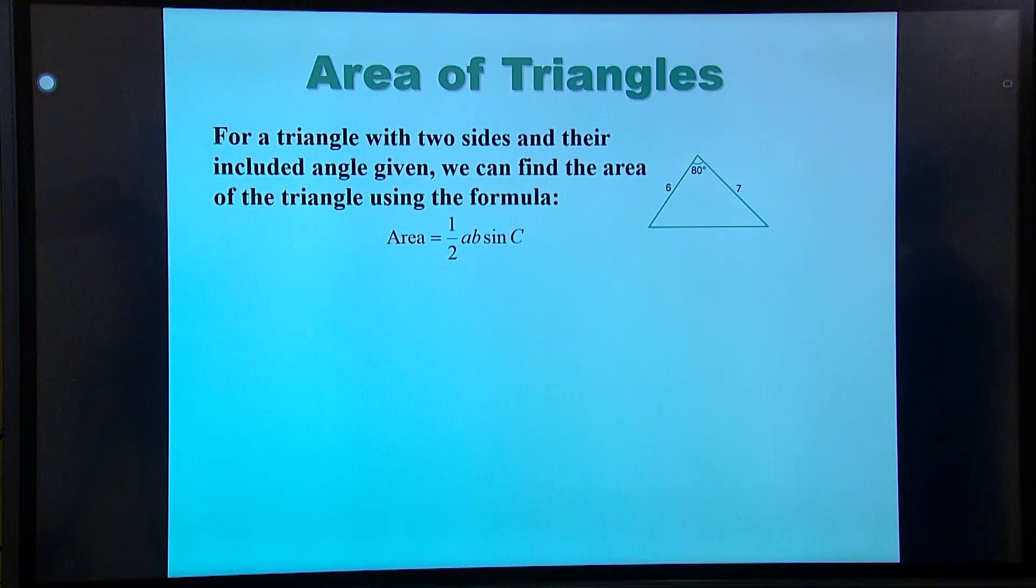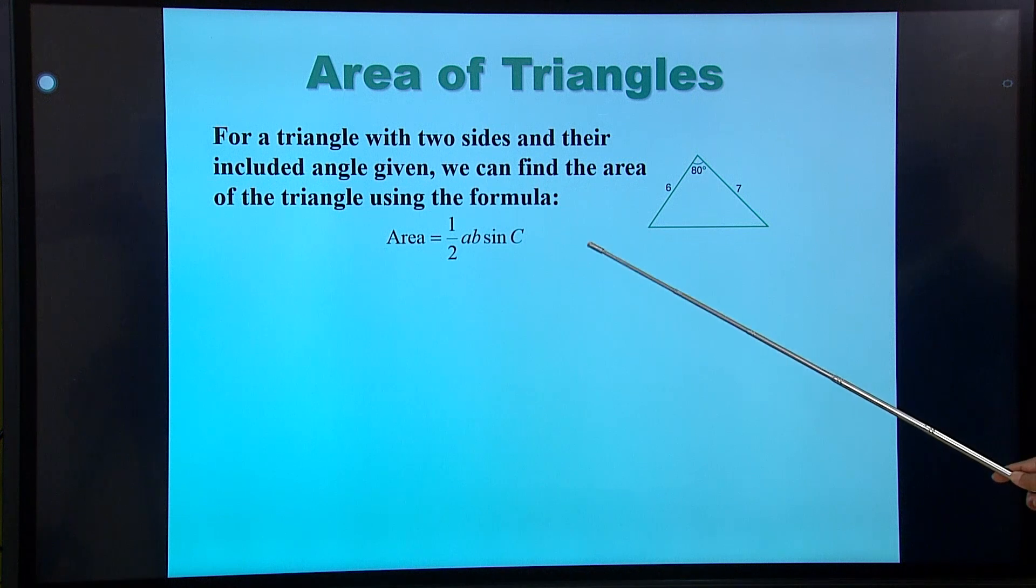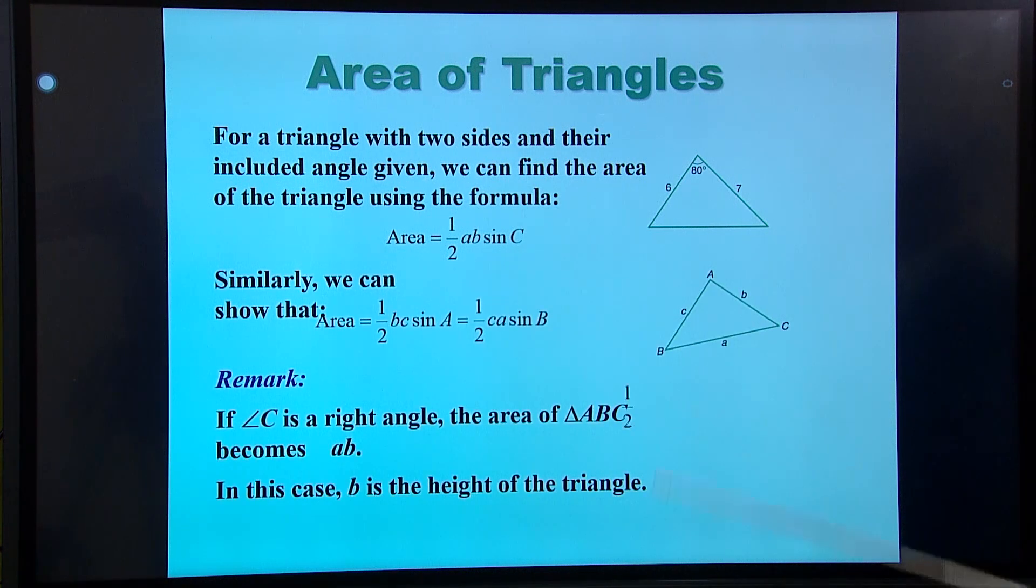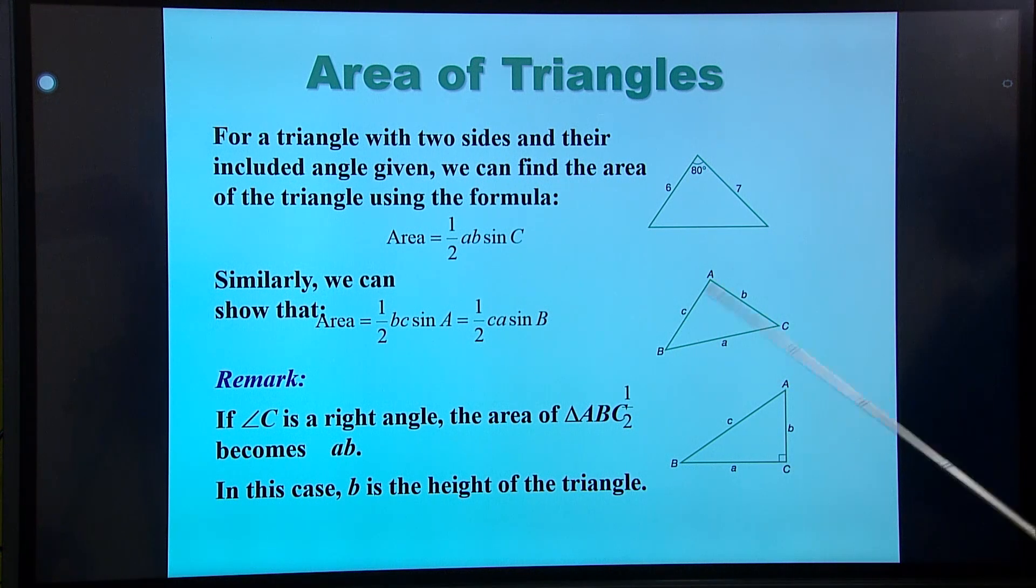Let's have a look at a problem. So the formula that we've derived is area is half AB sine C. Now when we look at the triangle, how do we label AB and C? A and B must be the two sides that includes the angle. So the angle must be between the two sides. And then I can substitute the values for that into this to find the area.